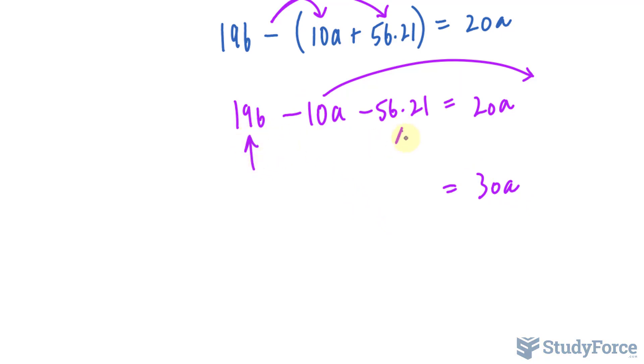And subtracting 196 with 56, let's round it to 56 for simplicity, we end up with 140. Dividing both sides by 30, that equals roughly 4.7 meters per second squared.